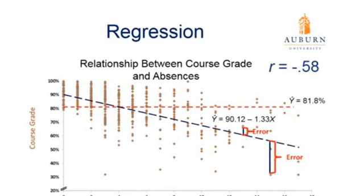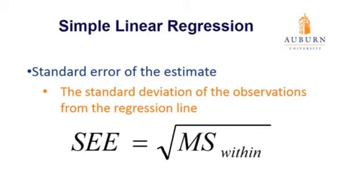We can plot that line on our scatterplot. When x equals 0, course grade on the y-axis is about 90% — specifically 90.12%. For every increase in absences, the line decreases by 1.33% of course grade. Even with a better prediction, there's still some error from each point to that regression line. For any particular prediction for a single student, there is a probability we are going to be off — our prediction is not exact, and there is a range of where our predicted value could fall.